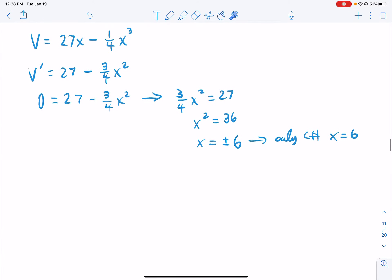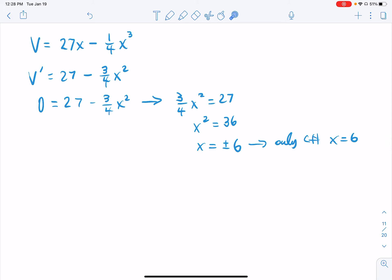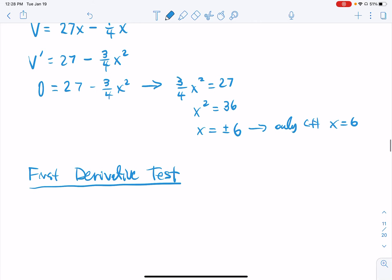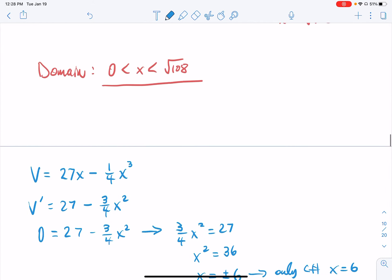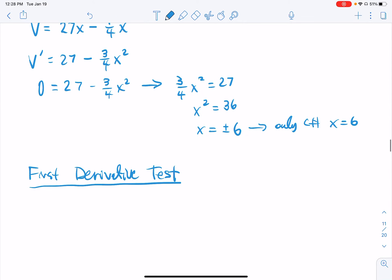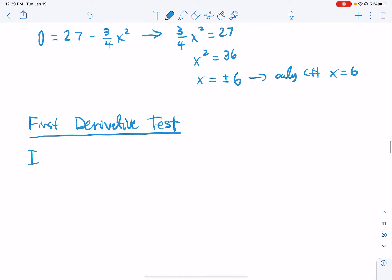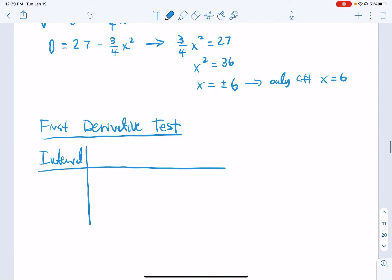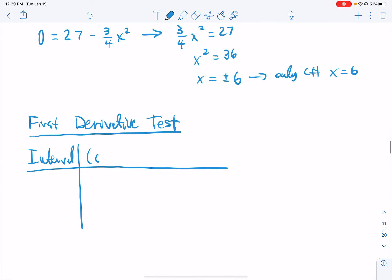So we're going to do either the first or the second derivative test. Since on the other one, I did a second derivative test, why don't we go ahead and do the first derivative test? Sounds good to me. First derivative test. So the first derivative test, you're going to take the domain, which is from 0 to square root of 108, and break it up with your critical number like so, intervals. And our intervals, our first one is going to be from 0 to 6.